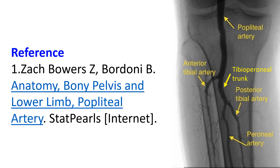Geniculate arteries arise from the popliteal artery at multiple levels, providing blood supply to the knee joint and adjacent structures. They also contribute to the collateral blood supply to the lower extremity.